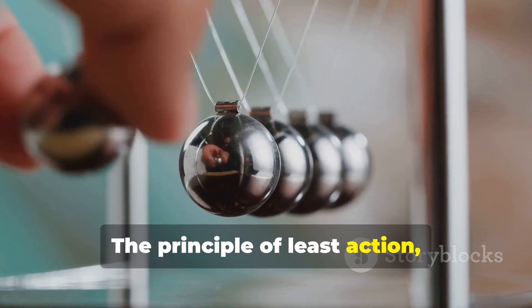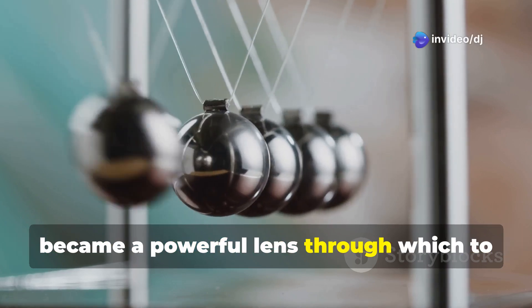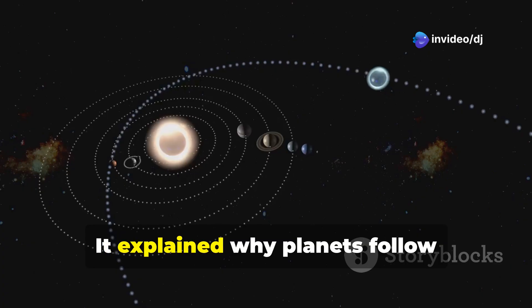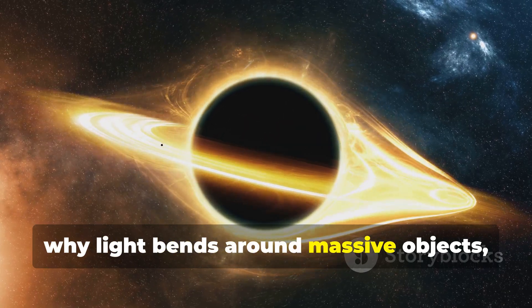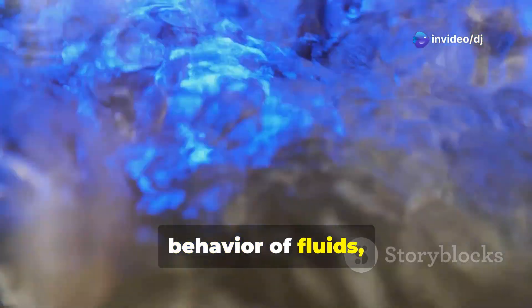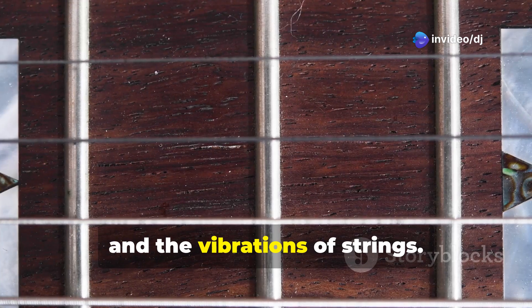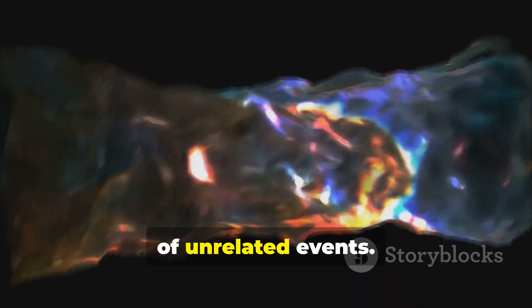The principle of least action, once a simple puzzle about a ball and a track, became a powerful lens through which to view the universe. It explained why planets follow elliptical orbits, why light bends around massive objects, and why objects fall to the ground at a specific acceleration. It even provided insights into the behavior of fluids, the flow of heat, and the vibrations of strings.